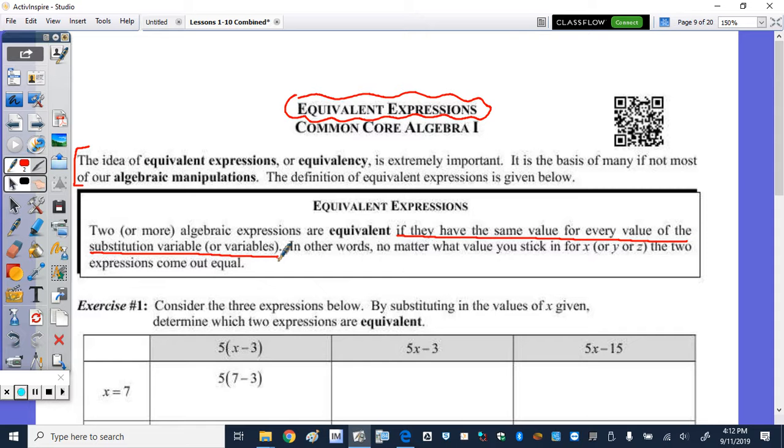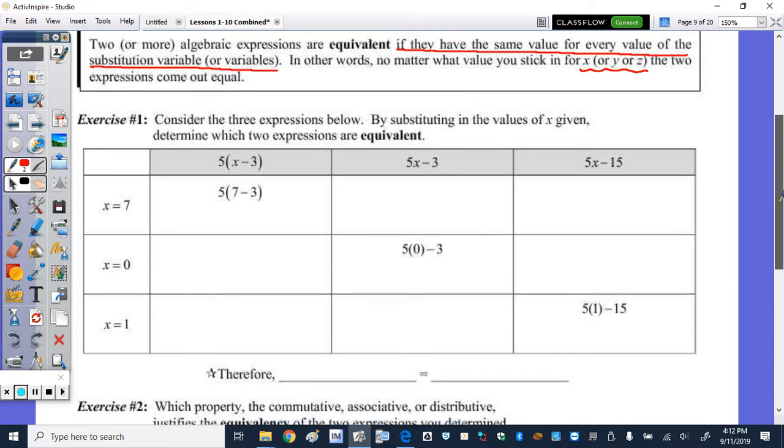So what that means is no matter what values you plug in for x, but x could be y or z, the two expressions come out to be equal. And we're going to explore this in an example or exercise one.